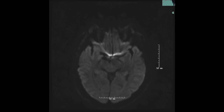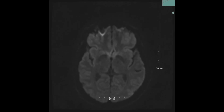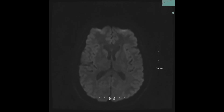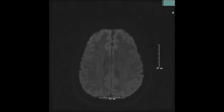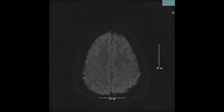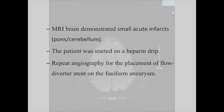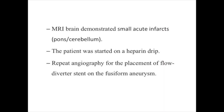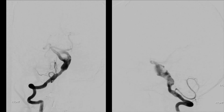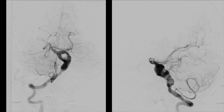MRI of the brain demonstrated surprisingly small areas of restricted diffusion in the pons as well as the cerebellum. We then, because of the intraluminal thrombus, started the patient on an intravenous heparin drip, and repeat angiography was then planned for about five to six days later, after starting the patient on dual antiplatelets.